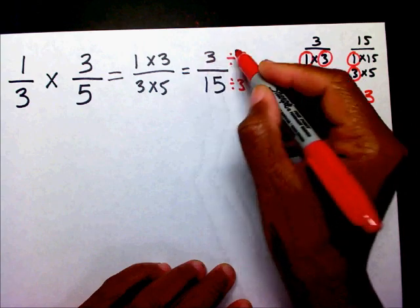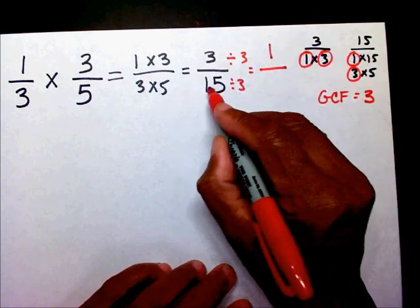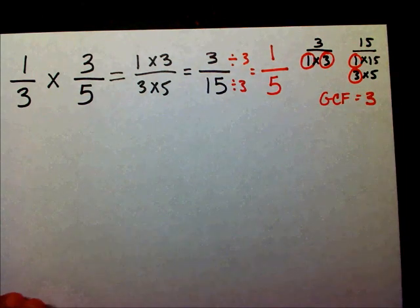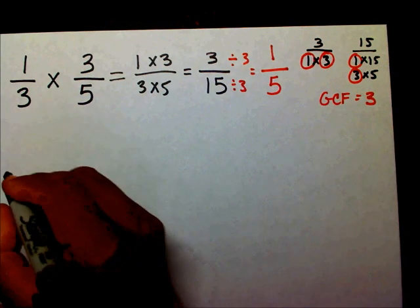So my final answer is going to be one divided by three is one. Fifteen divided by three is five. Let's try another one.